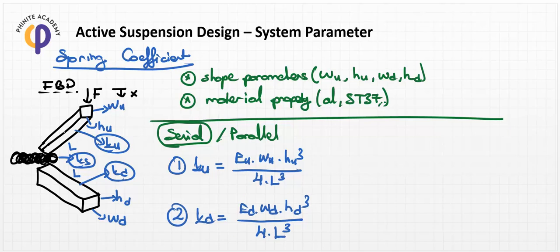This is the standard formula for the beam bending approach. If we select a cylindrical cross-section instead, then the formula needs to be changed to the correct one for cylindrical geometry.